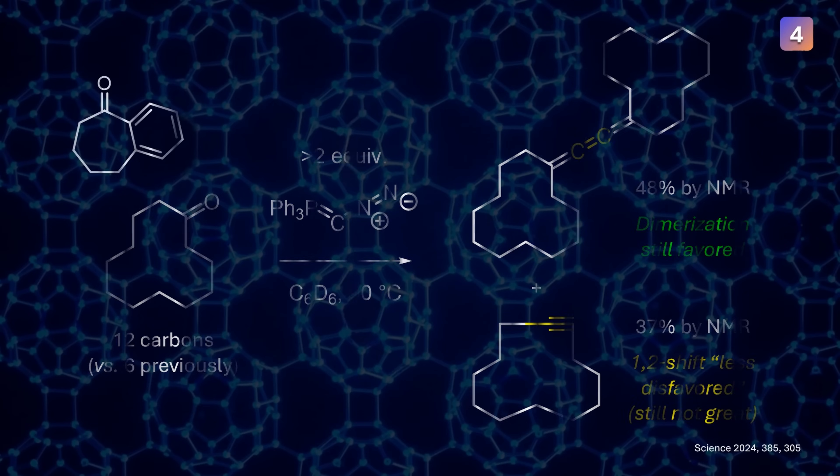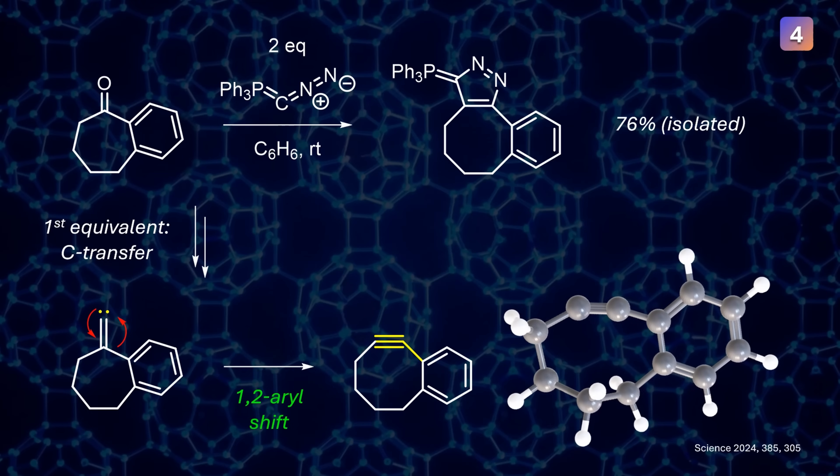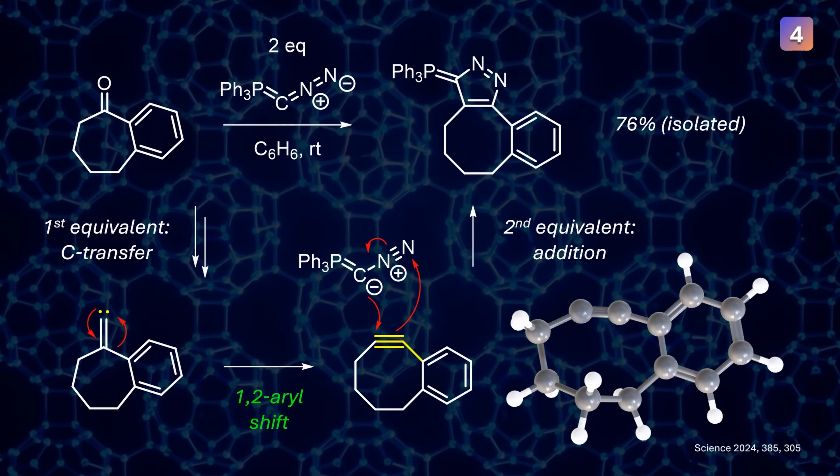We can close the loop by looking at the reaction with benzosuberone, which gave the following product. Can you figure out how this works? Now, the aryl rest can migrate more readily, giving the strained cyclic alkyne as a first intermediate. It has a low energy LUMO, so it can undergo a dipolar cycloaddition, just like we've seen numerous times today already. 76% yield for such a strange ylid is not too shabby and might be pretty useful for someone in the future.